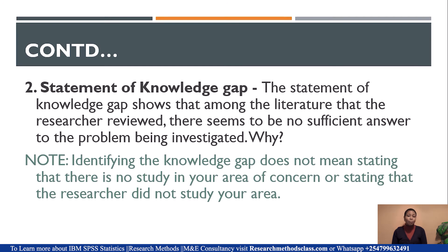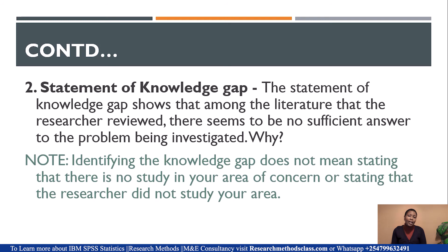The second paragraph is the statement of knowledge gap, and this is where many students have a problem. Under the statement of knowledge gap, it does not mean that you identify the gap by stating that the author you quoted did not do A, B, C, D — or stating that there is no literature on your area of concern. If there is no literature, how did you write the background? By identifying the knowledge gap, you are saying that many people have done this, but they have left out the area that your problem is coming to identify.